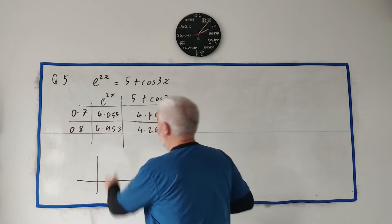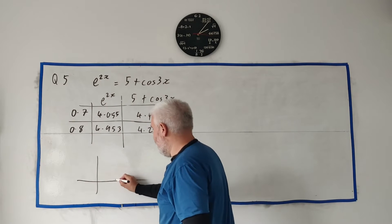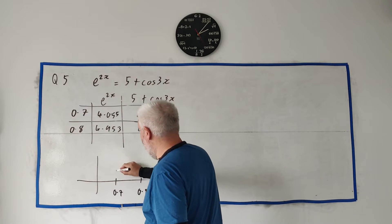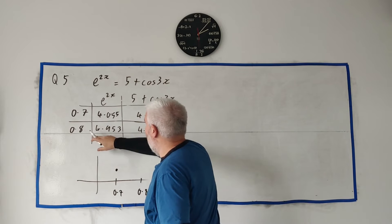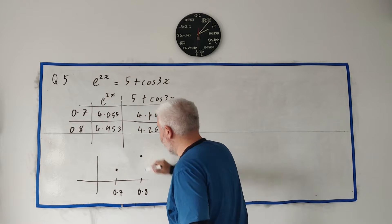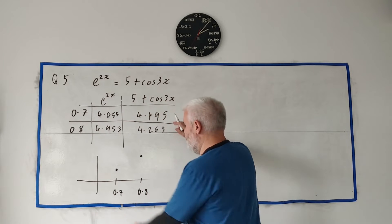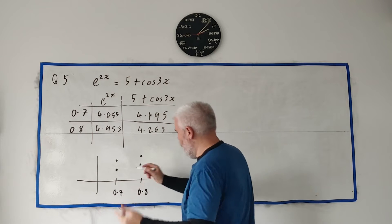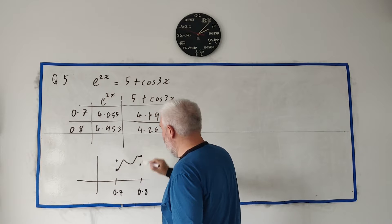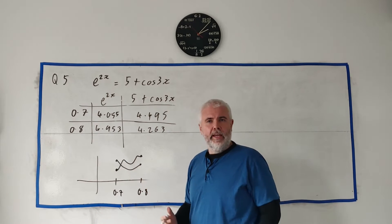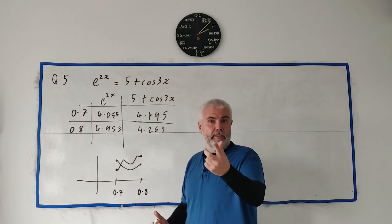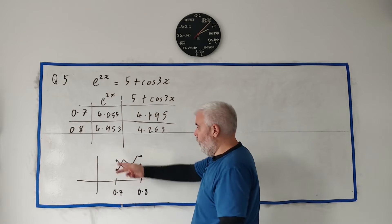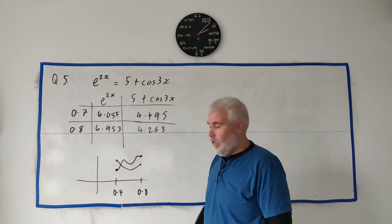Now what does that tell us? I'm not going to draw this accurately. At x = 0.7 and x = 0.8: e to the 2x is at 4.055 at 0.7 and 4.953 at 0.8. And 5 plus cosine 3x is at 4.495 at 0.7 and 4.263 at 0.8. No matter how you get between these two points, the two curves have to cross at some point. They told us there's only one real root, so it can only cross once — but it has to have crossed between these two points, because at 0.7 one was above the other, and at 0.8 it was the other way around.